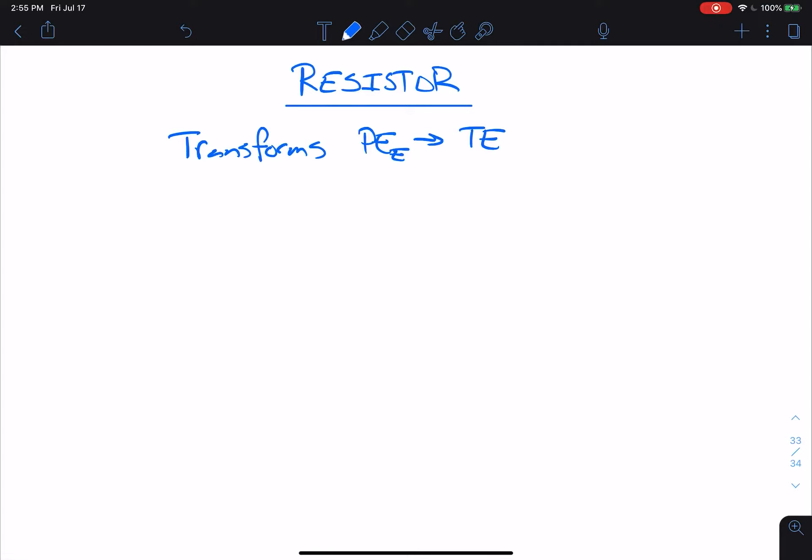Some examples of this would be a stovetop element. You run current through it when you turn it on, and it gets hot, might even start glowing red. That's because it's turning electrical energy into thermal energy.